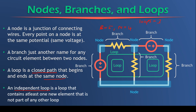But how many independent loops do we have? An independent loop is a loop that contains at least one new element or new branch that is not part of any other loop. Loop one has a new source, resistor, and a resistor — all new — so loop one is an independent loop. In loop two, one element is already part of loop one, but the other two are new, so loop two is also an independent loop. In loop three, the outer loop, all elements have already been used in either loop one or loop two, so loop three is not an independent loop. Therefore the number of independent loops, denoted by the cursive L, is equal to two.